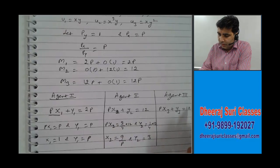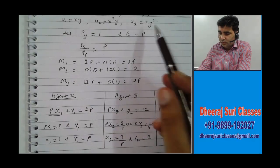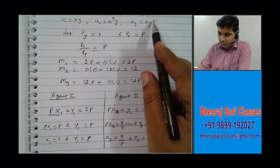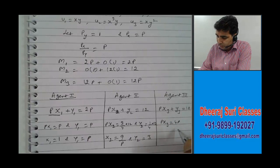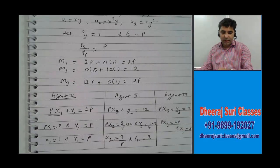Similarly, agent 3 also has Cobb-Douglas preferences: x·y squared. The ratio is 1 to 2, so he is spending 1/3 on good 1 and 2/3 on good 2. So Px·x3 is 1/3 of 12P, which is 4P, meaning x3 is 4. And y3 is 2/3 of 12P, which is 8P.